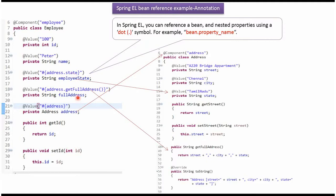EmployeeState value will be injected as Tamil Nadu because here I have used Spring expression Address.State. FullAddress will be injected as the concatenated value of Street, City, and State because here I have used Spring expression language Address.GetFullAddress.